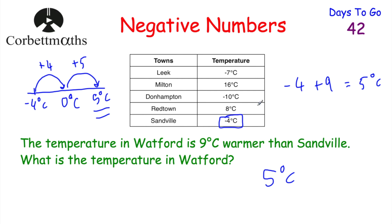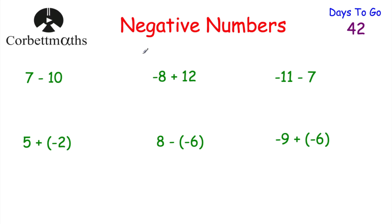We've looked at negative number questions in context involving temperatures. Now let's look at some arithmetic involving negative numbers — all non-calculator questions. Here are some to try: 7 subtract 10, negative 8 plus 12, negative 11 subtract 7, 5 plus negative 2, 8 subtract negative 6, and negative 9 plus negative 6. For the first one, 7 subtract 10: 7 subtract 7 gets to zero, then subtract 3 more, so the answer is negative 3.